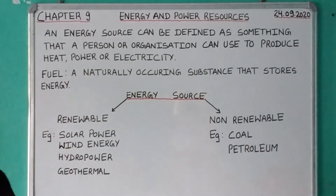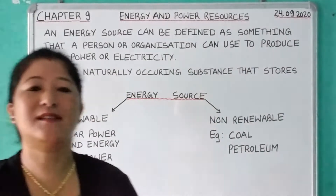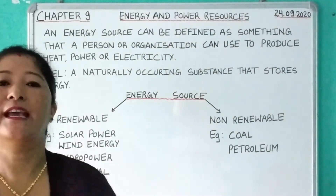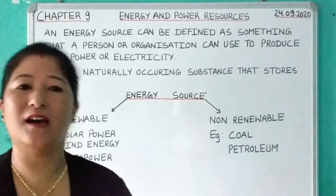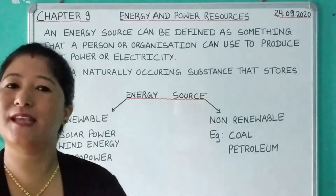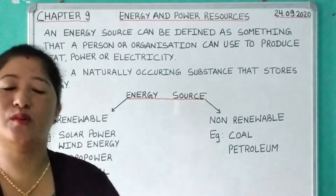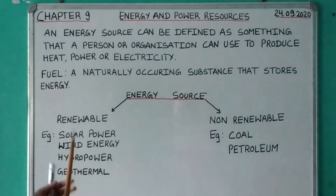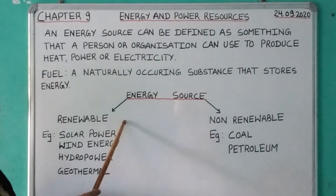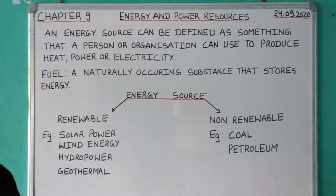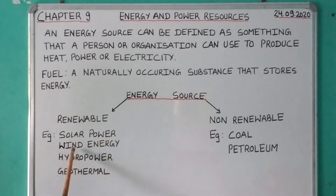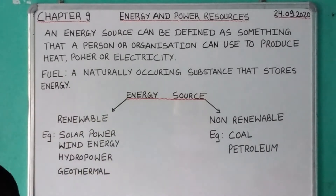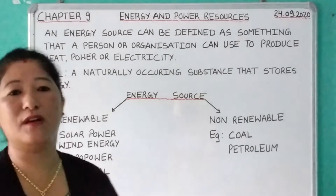Renewable sources are those energy sources that can be used again and again, since their supply is unlimited in nature. Examples include solar power, wind energy, hydropower, and geothermal energy. These are categorized as renewable sources of energy.